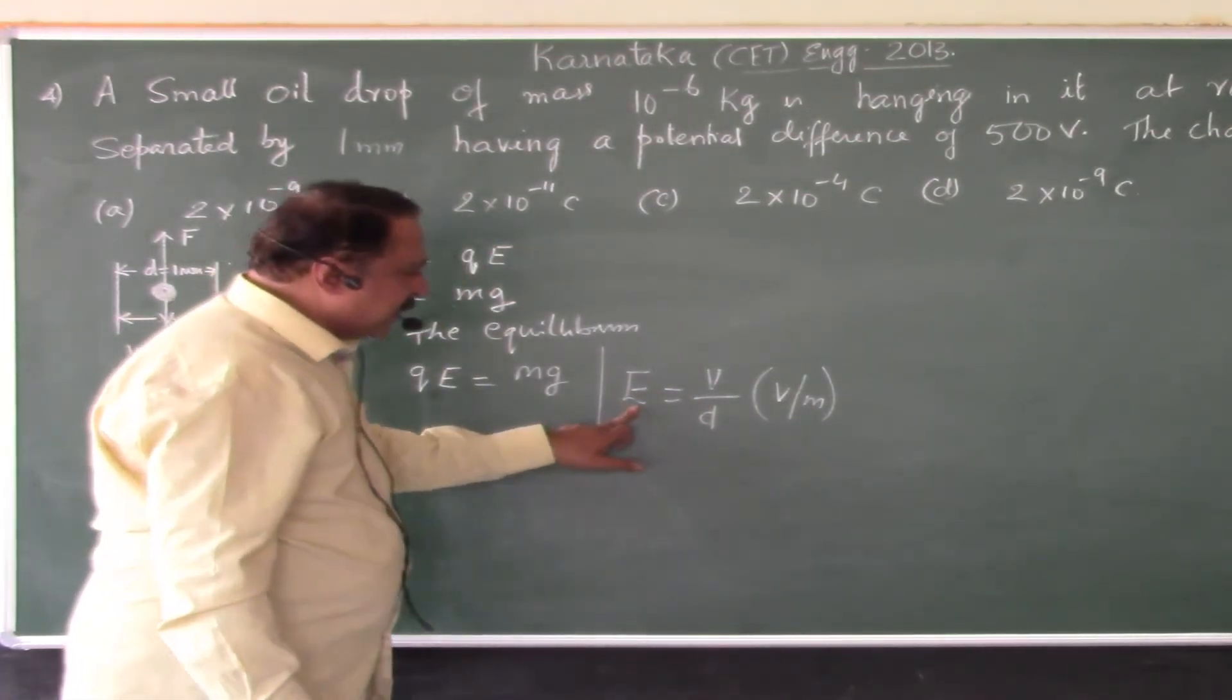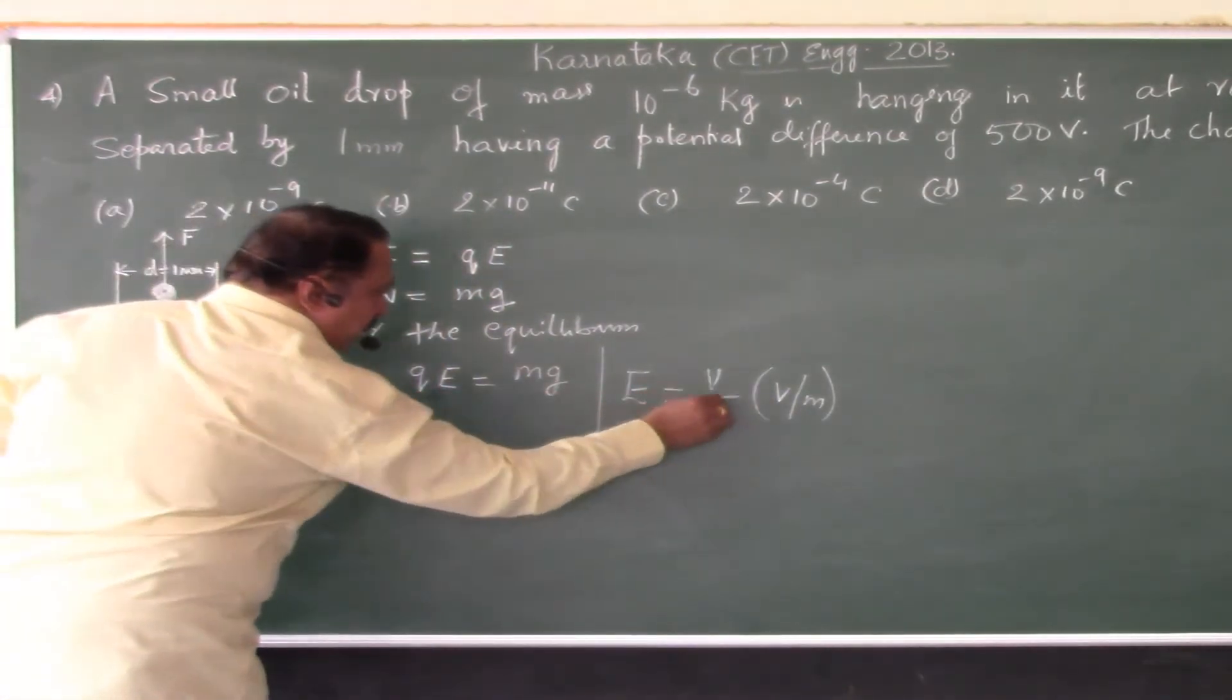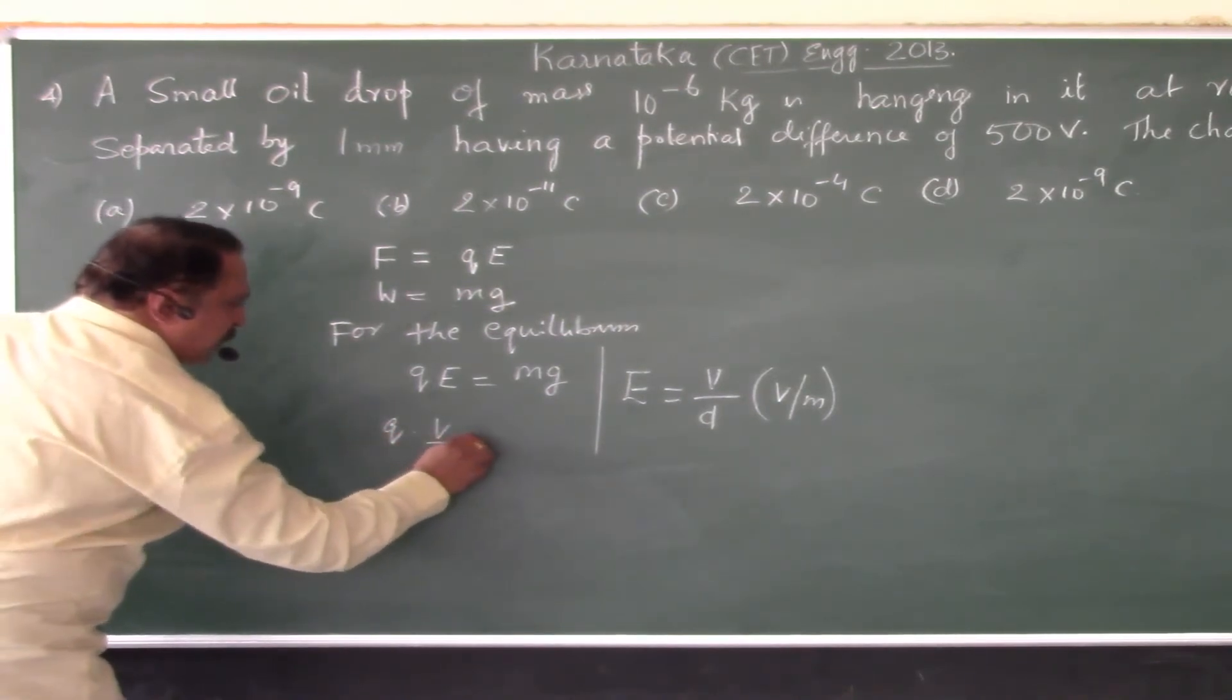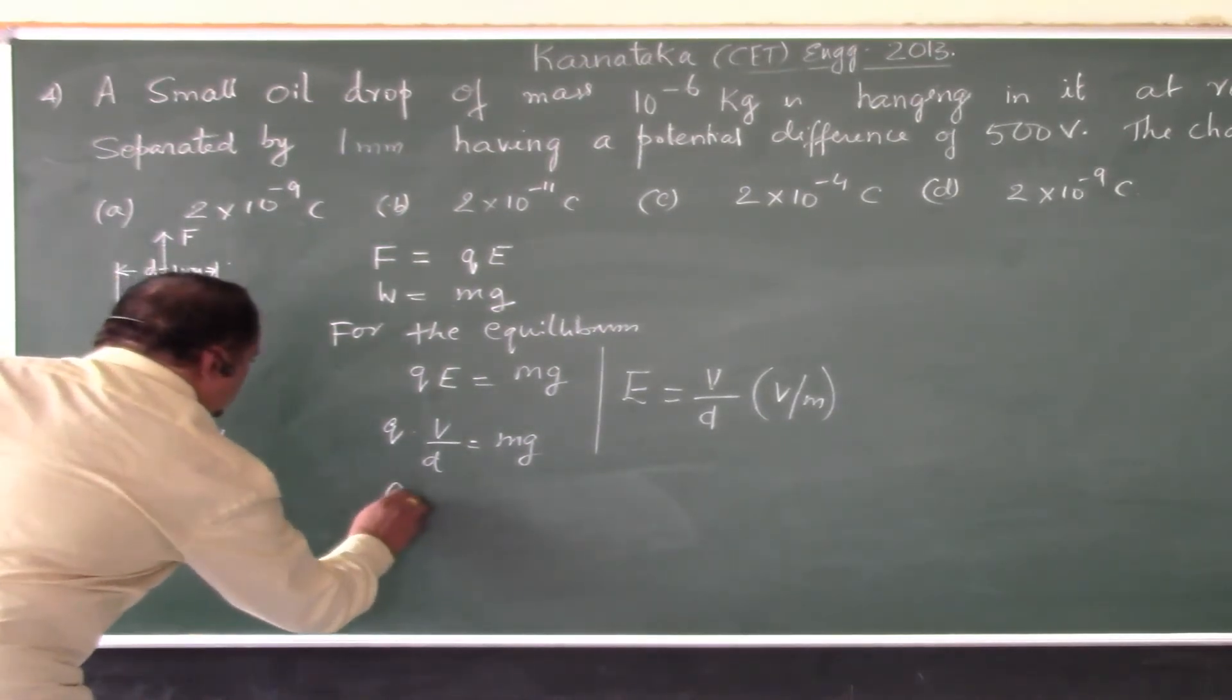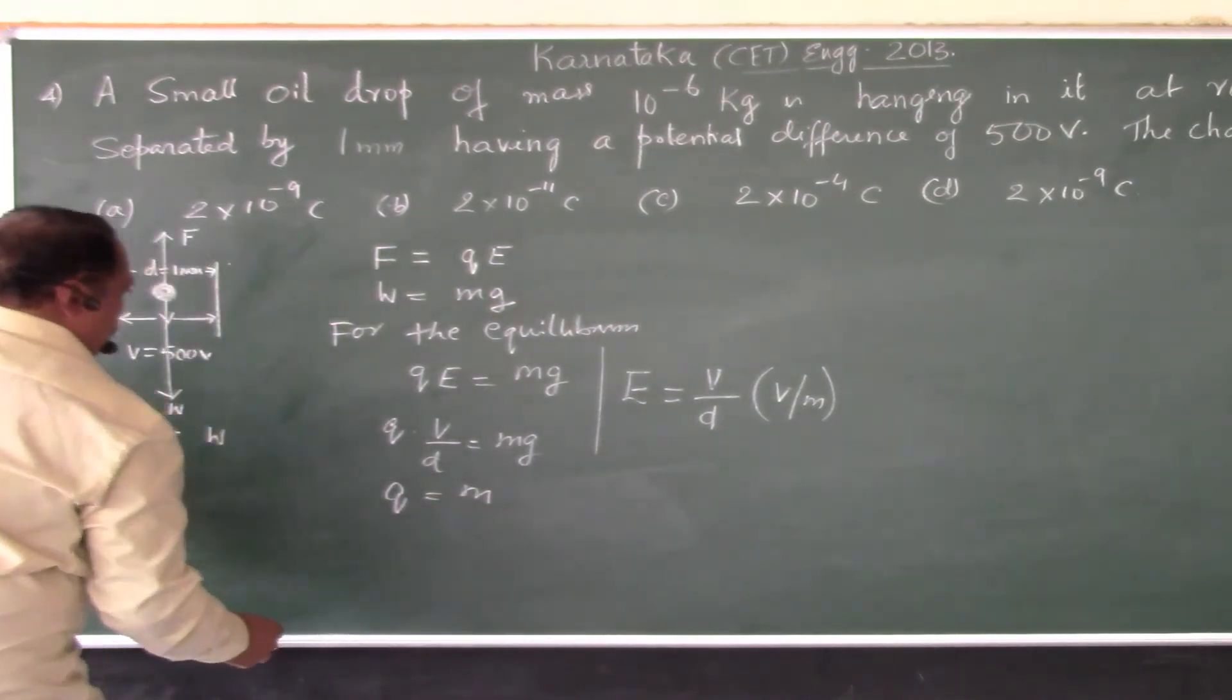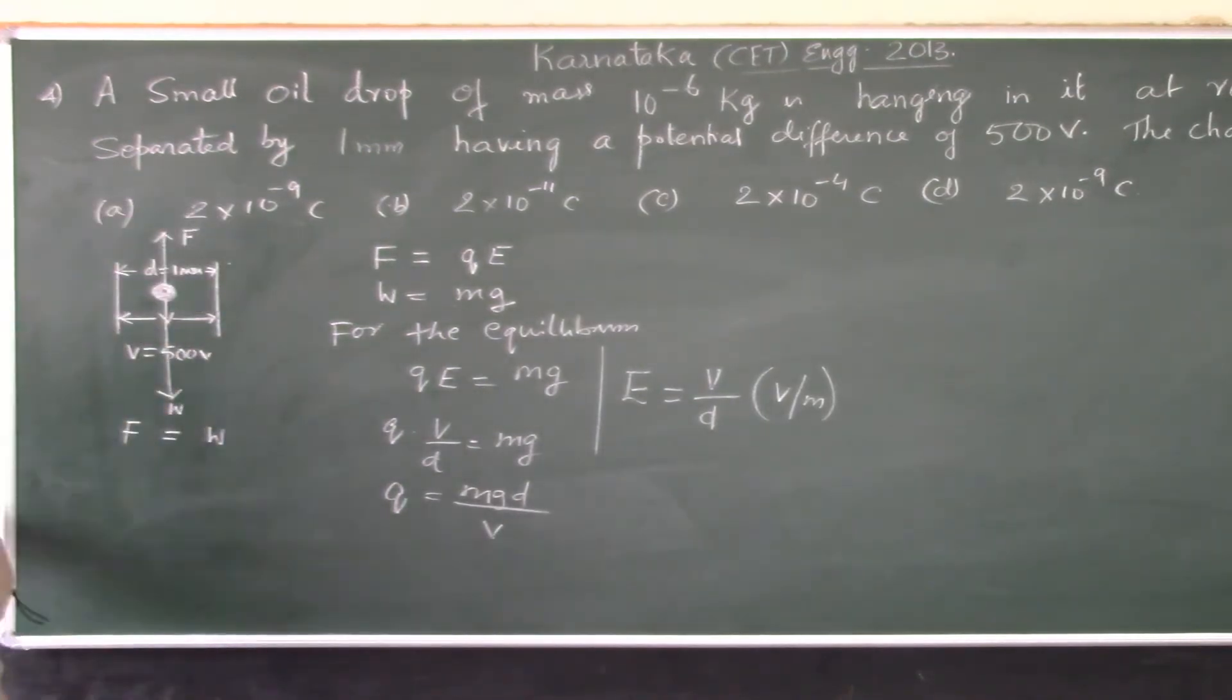Since the electric intensity can also be expressed as volts per meter, we have E is equal to V by D. Substitute: Q into V by D equals mg, and we want the value of Q. Q equals mgD by V, cross multiplying and arranging.